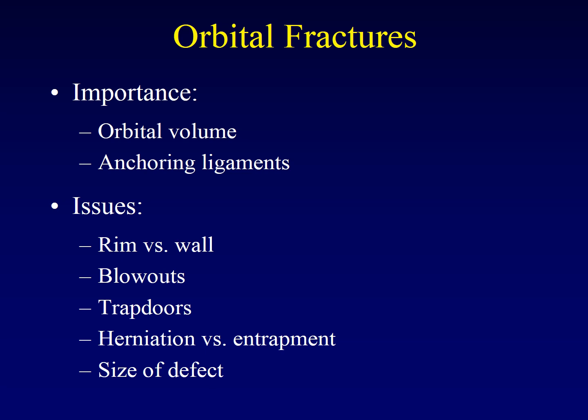Important things to discuss when dictating orbital fractures include extent: does the fracture extend all the way to the orbital rim and involve the rim itself, or is it confined to one of the walls? Is it a blowout fracture, which results when the globe is driven back into the orbit with a sudden increase in intraorbital pressure and one of the walls gives out?